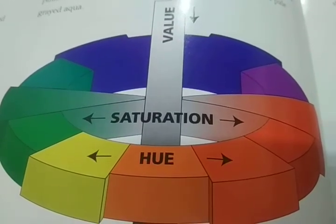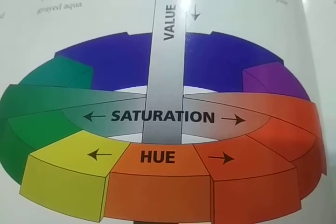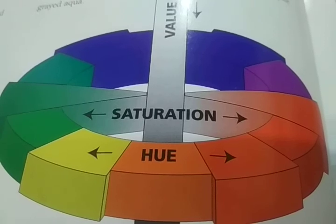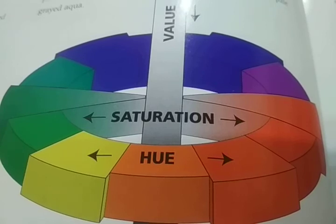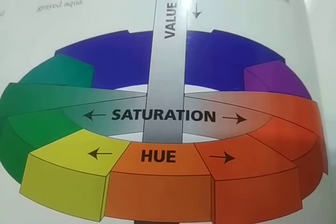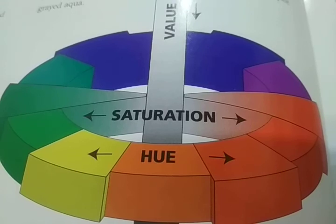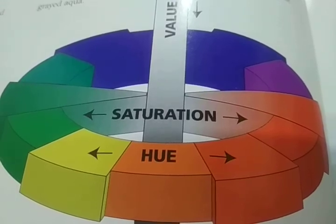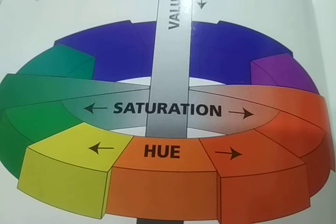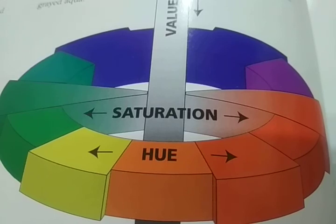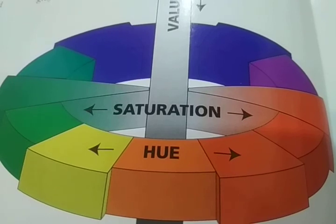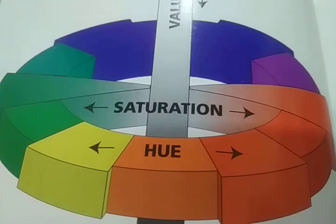I hope I explained properly what is hue, what is saturation, and what is value in the color wheel. If you understand the color wheel, you can properly match colors, make combinations, and make compositions. Hope you liked this one — please share it, like it, and if you haven't subscribed to my channel, please subscribe.